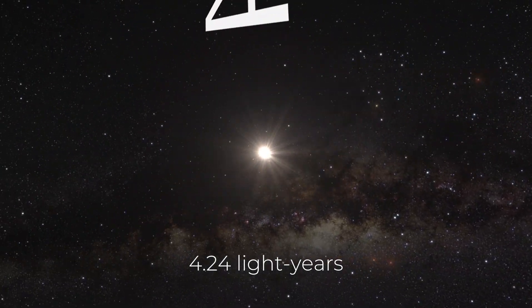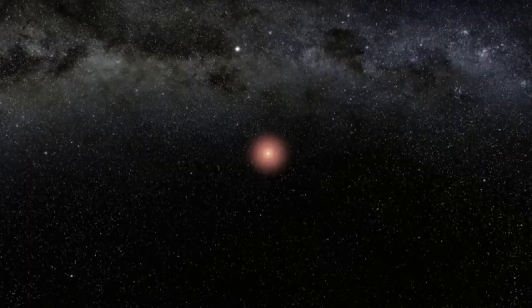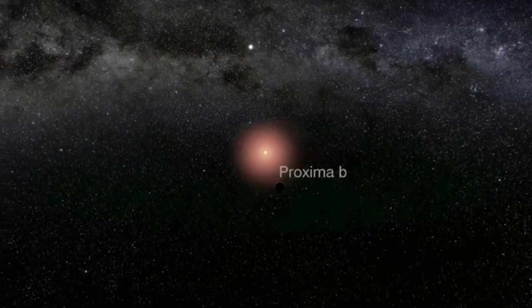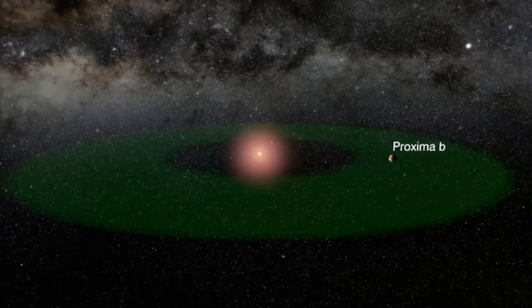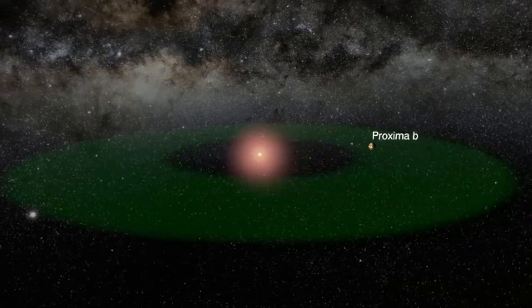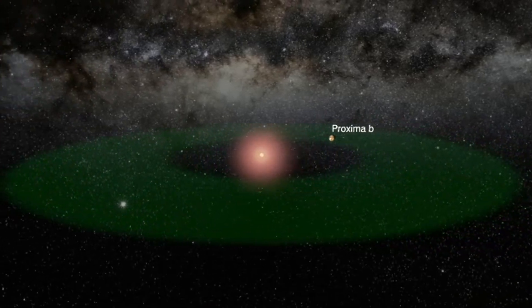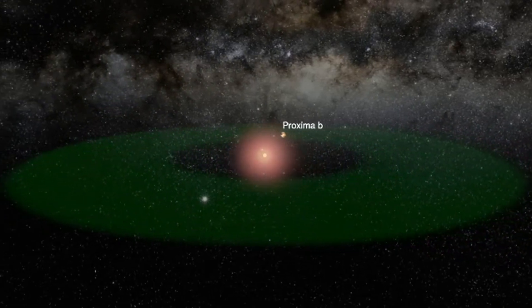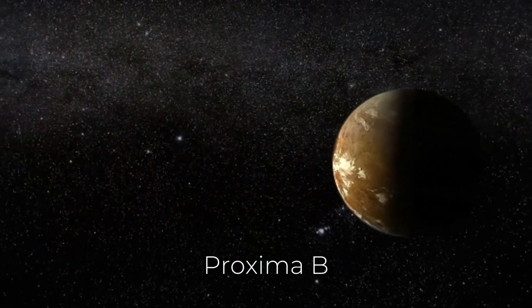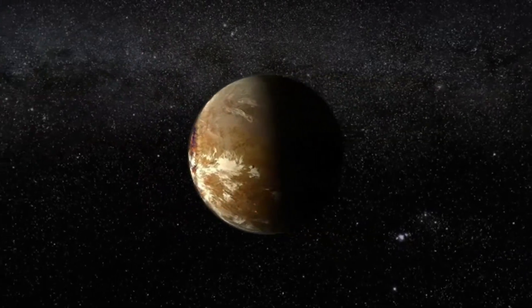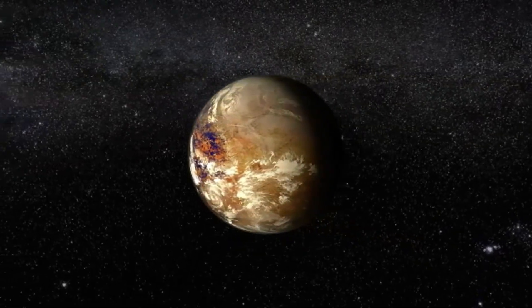Proxima B is located just 4.24 light-years away from Earth. That's pretty close in space terms. It orbits in what's known as a habitable zone around its star, Proxima Centauri. Now, the habitable zone is basically an area where conditions could allow for liquid water to exist, which is one of the key ingredients for life as we know it. So naturally, scientists have been eager to study this planet and see if it might hold any clues about the possibility of life beyond Earth.